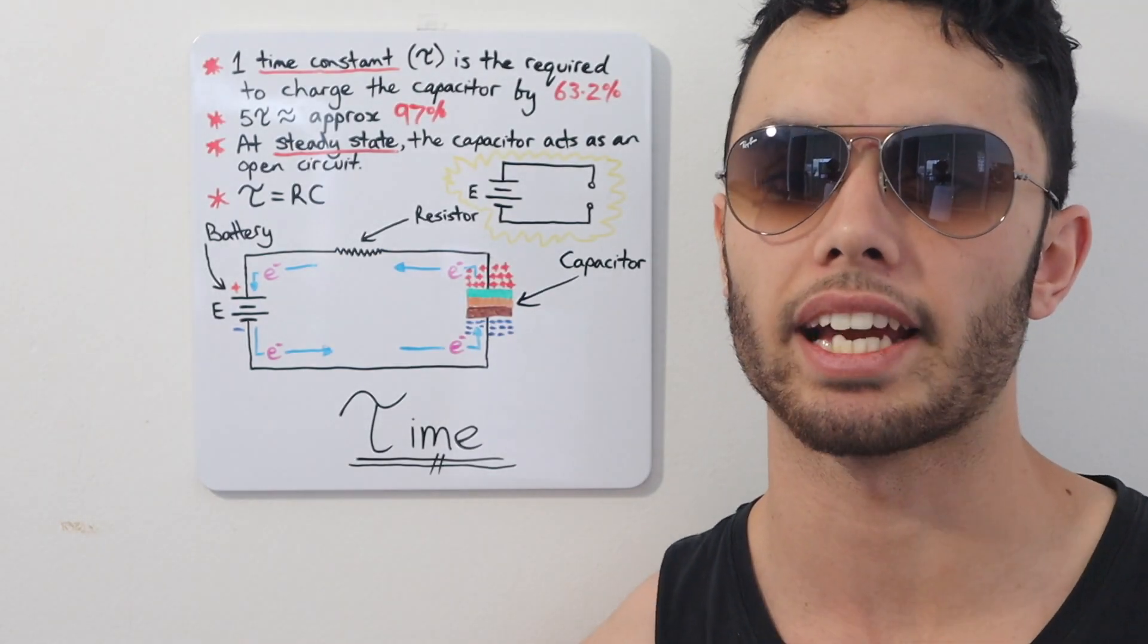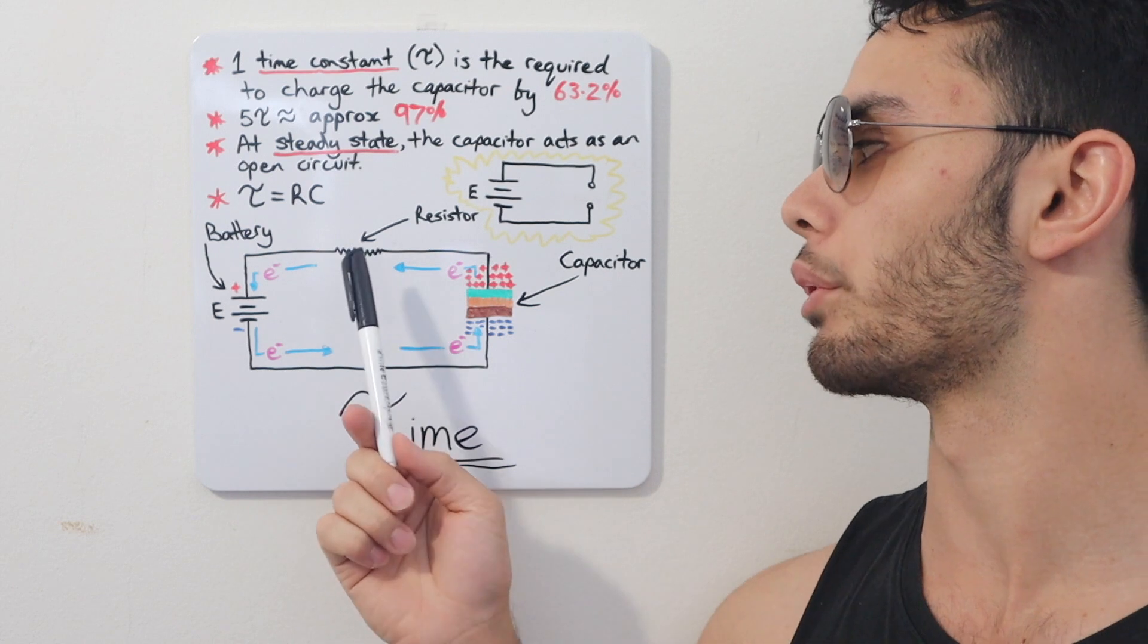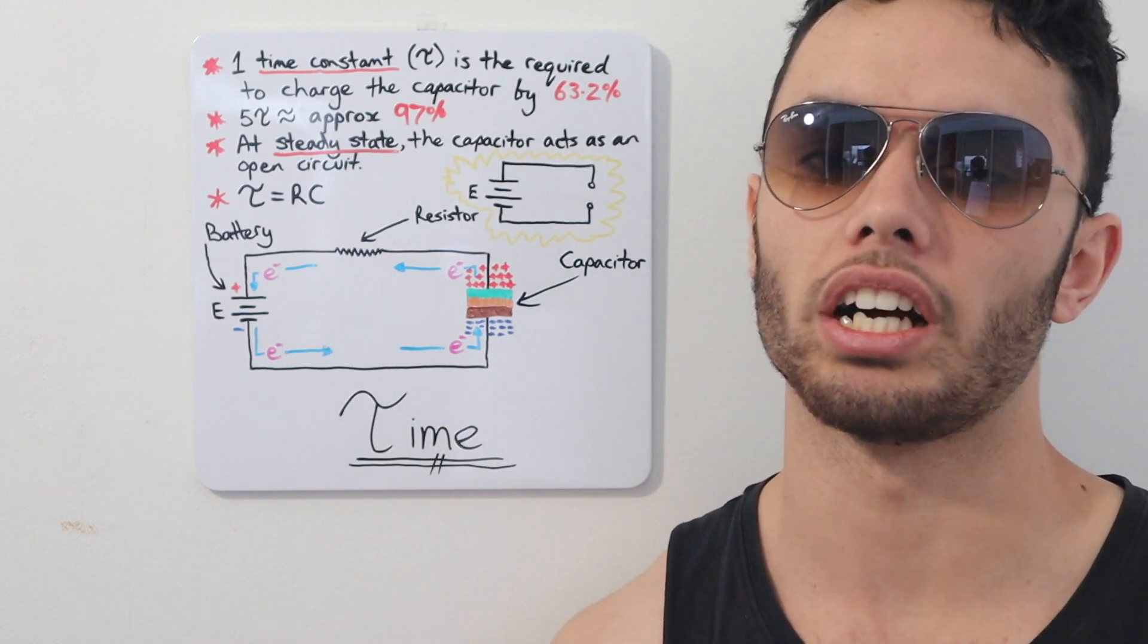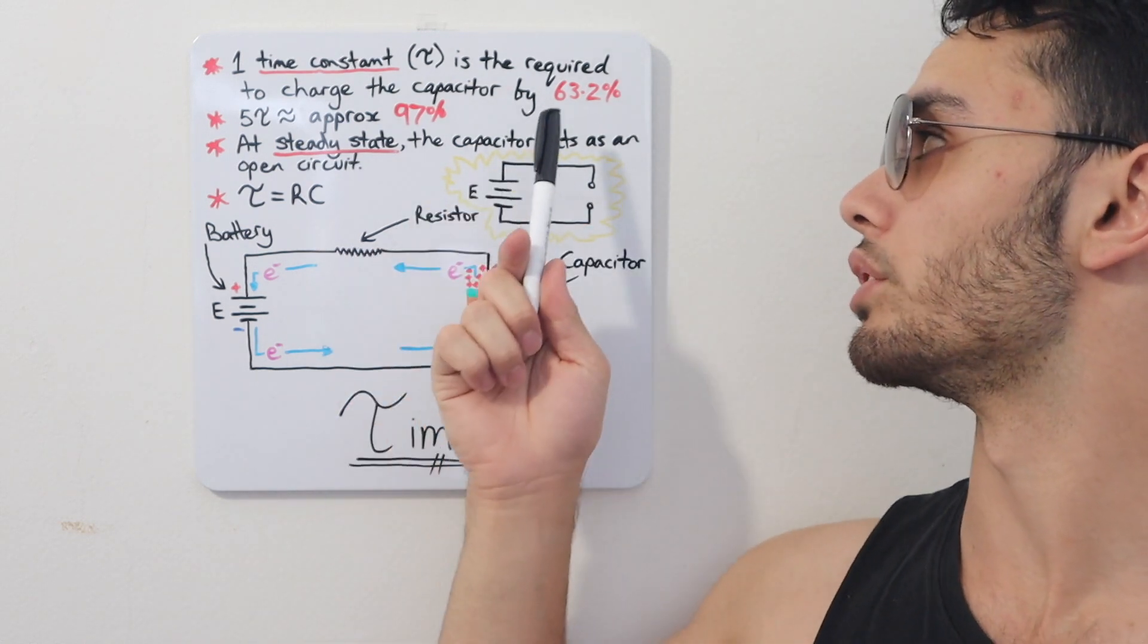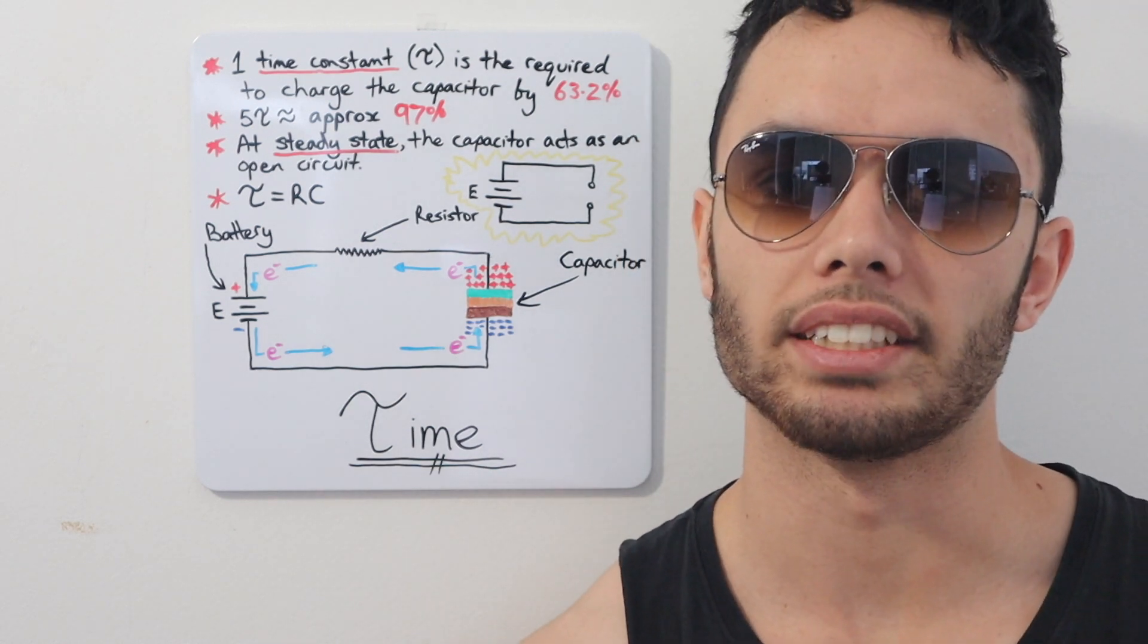The time constant allows us to calculate the time required to charge the capacitor through the resistor from an initial charge of zero to 63.2% of the applied DC voltage.